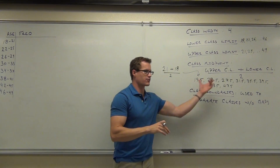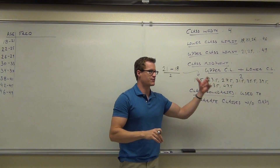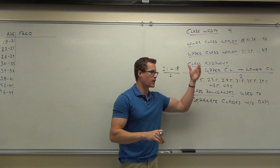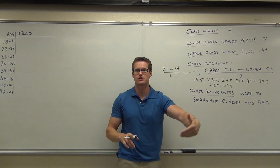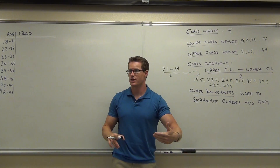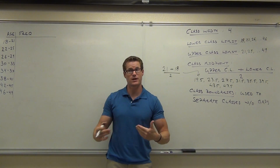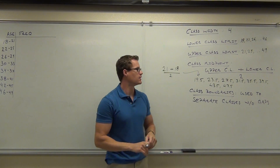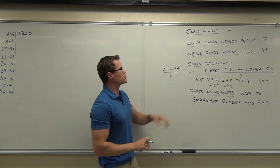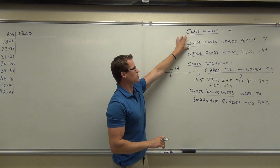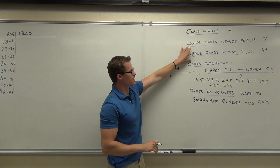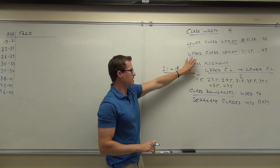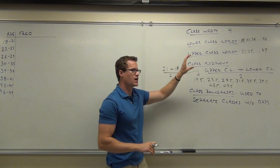Remember, you don't have to do the work for every one of these. You just have to know the first one and know your class width. If you know your class width, it becomes very, very easy here. So we should have eight lower class limits, eight upper class limits, eight class midpoints.